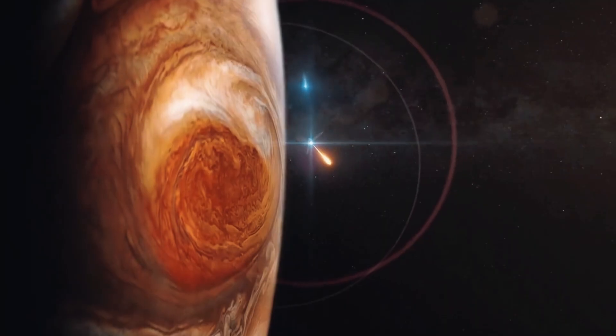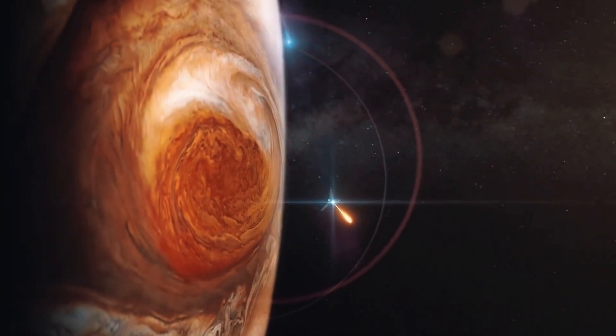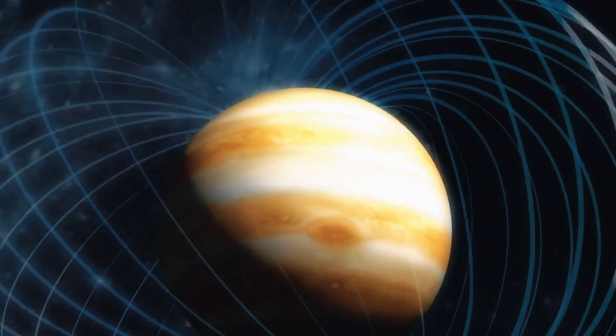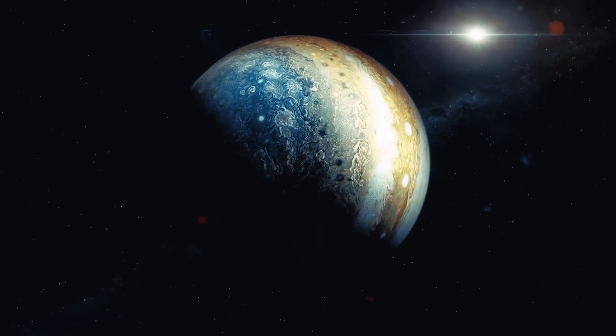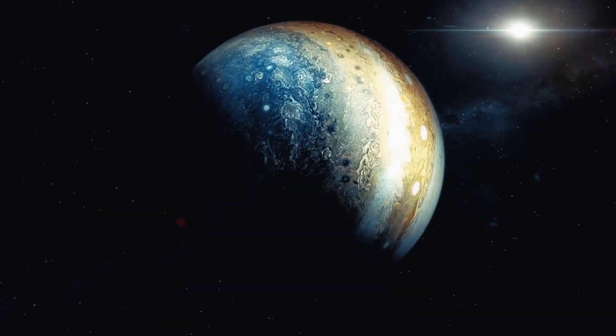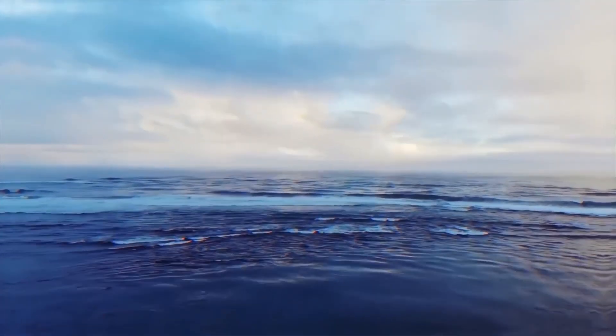Stated differently, Europa rotates on its axis, ensuring that the moon's side is constantly facing the gas giant Jupiter. This is not the same as our moon, which always faces the sun. Europa has a distinct climate as a result of this occurrence.